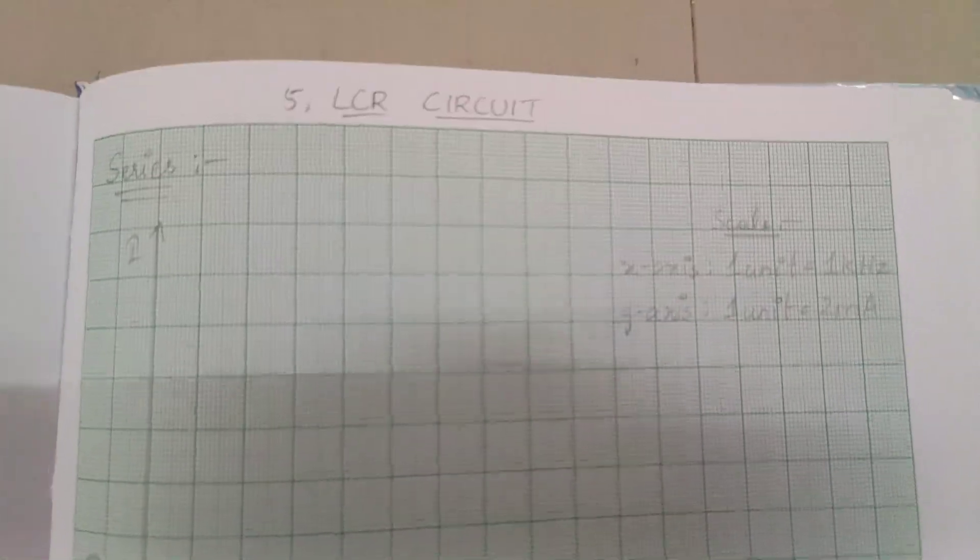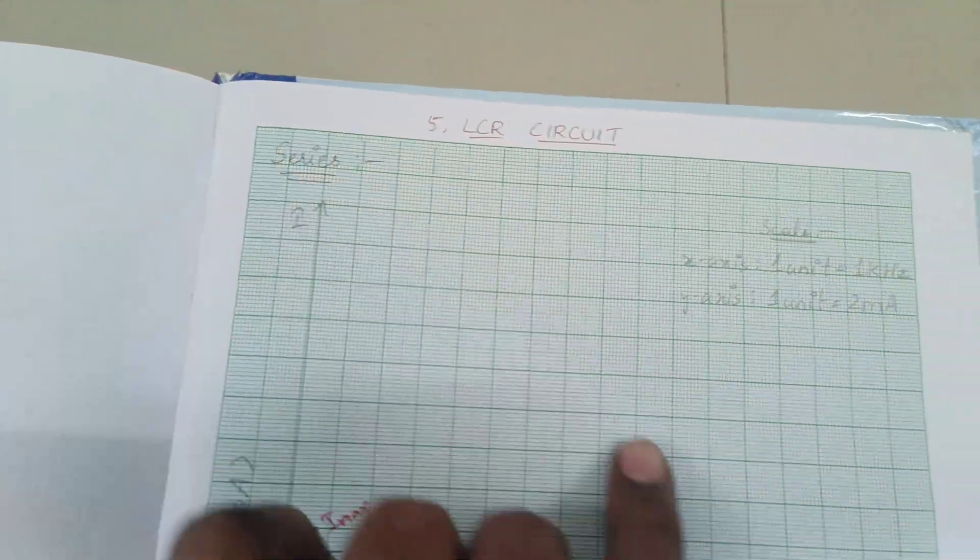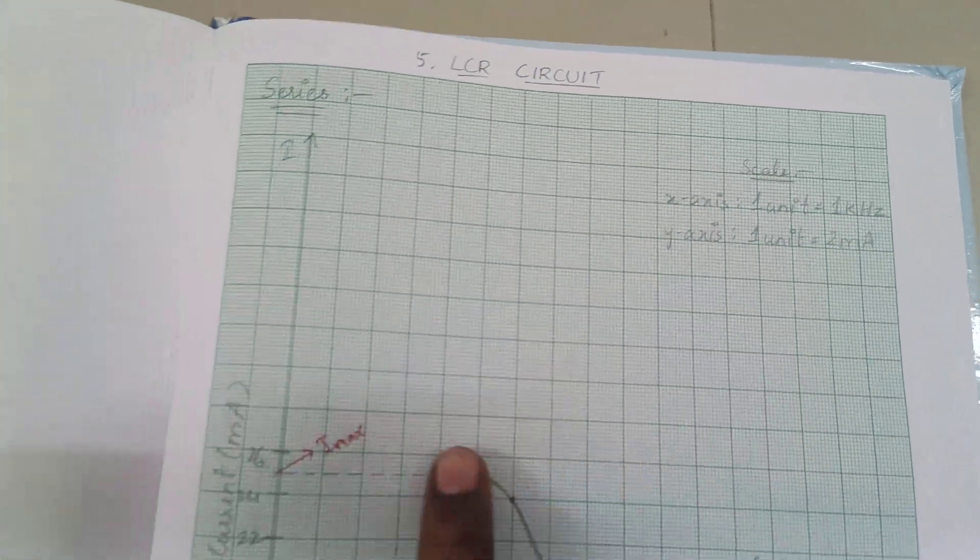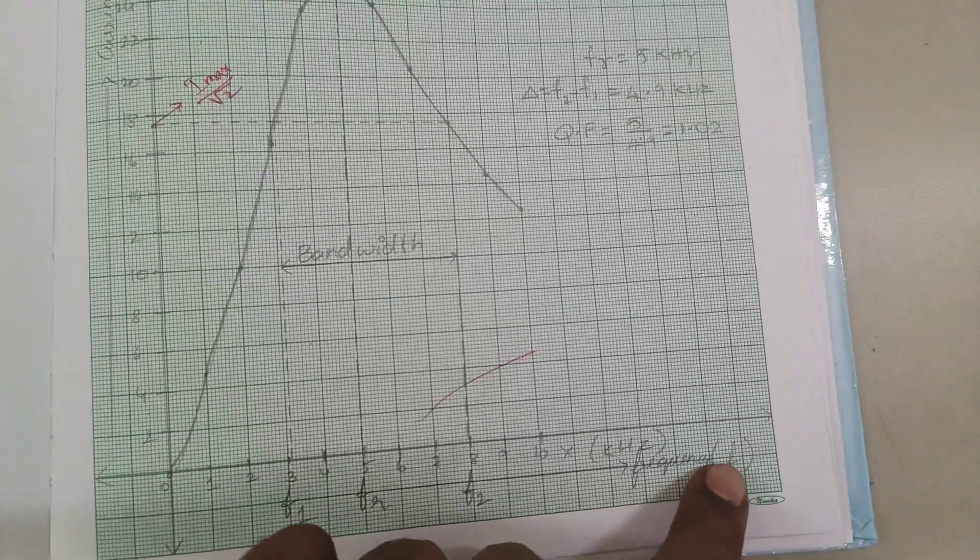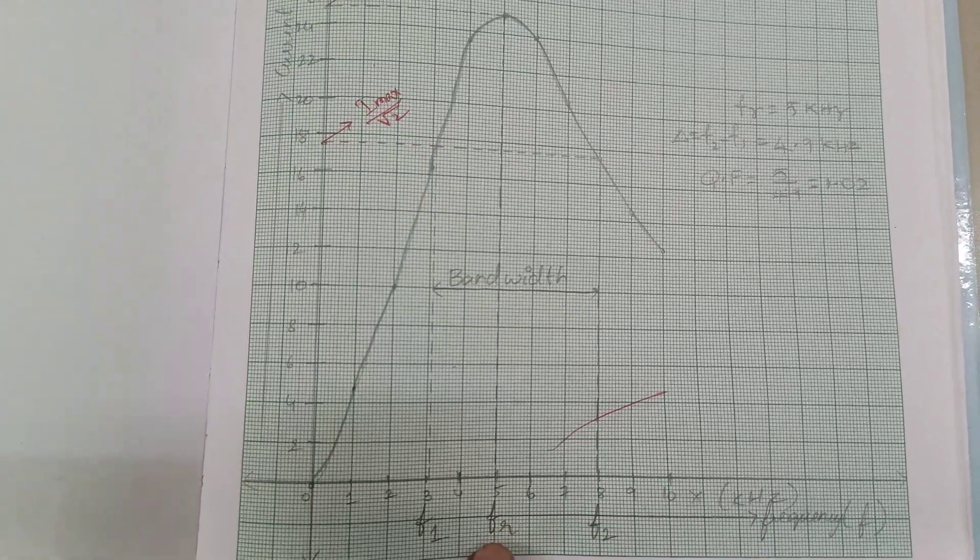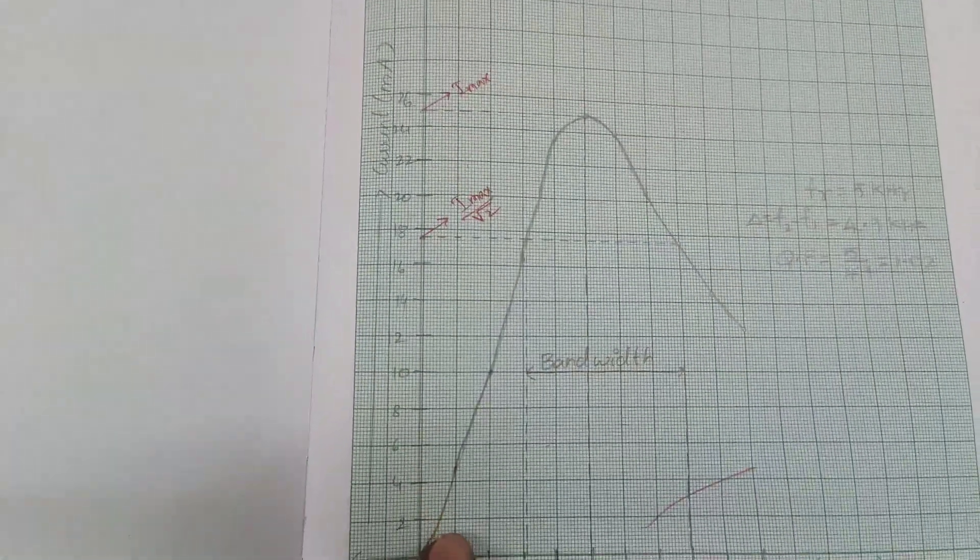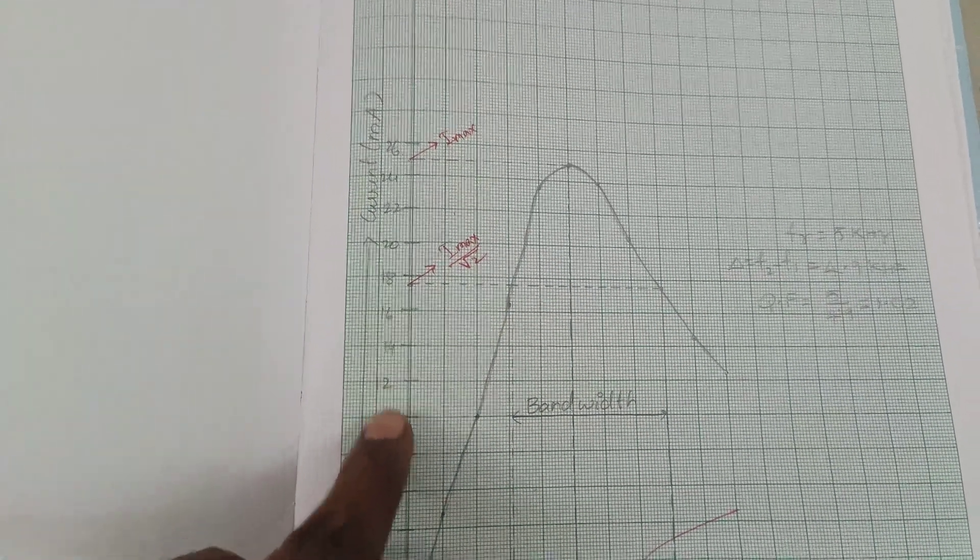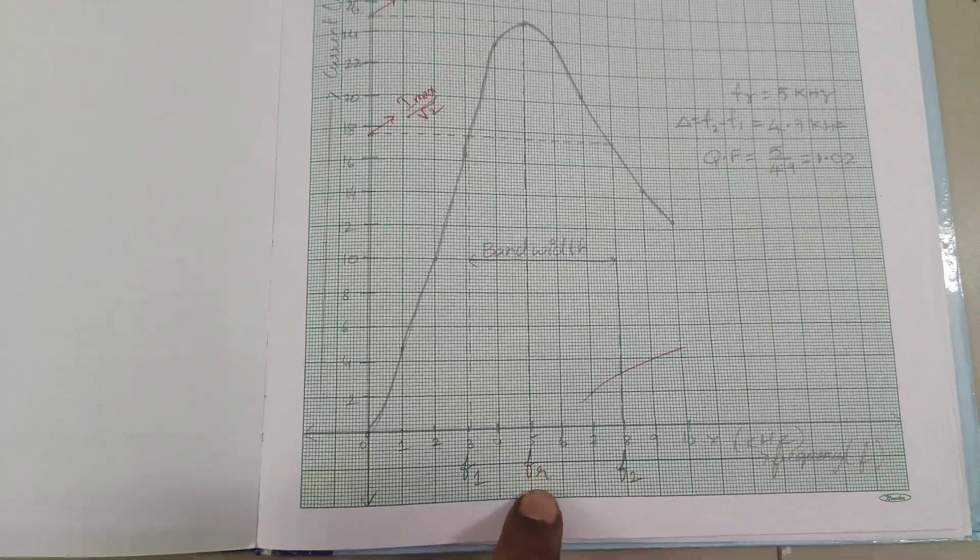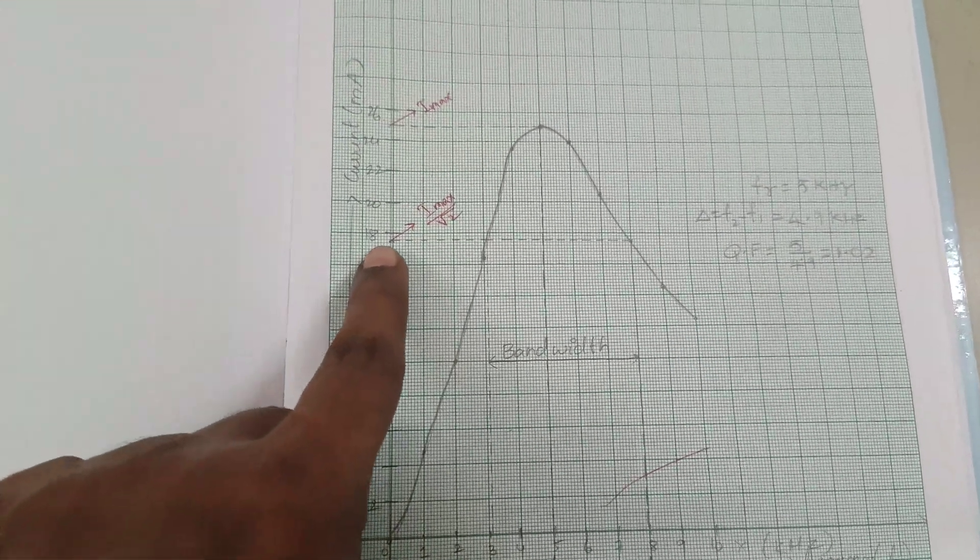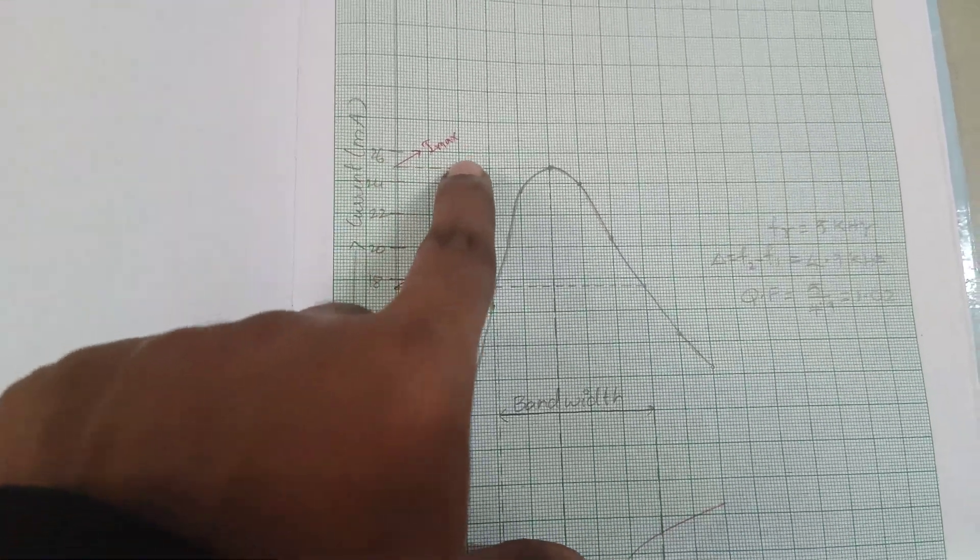This is the graph for the series combination circuit. Here we have frequency, resonant frequency Fr, and current. This frequency is the resonant frequency. This point is Imax divided by root 2, and this is Imax.